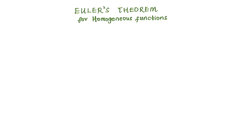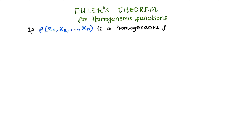Euler's theorem for homogeneous functions states that if a certain function f of a set of independent variables — let's say the function has independent variables x1, x2, and xn — is a homogeneous function of those independent variables of a certain degree k,